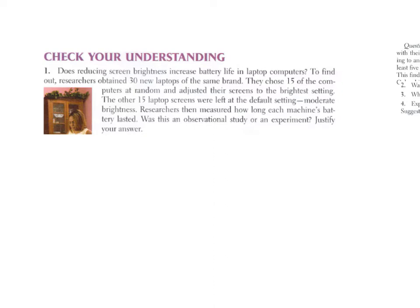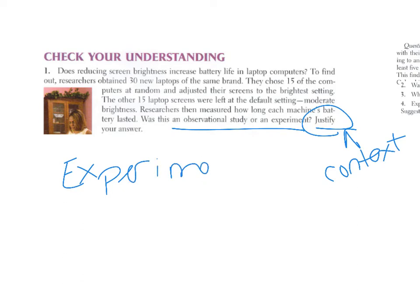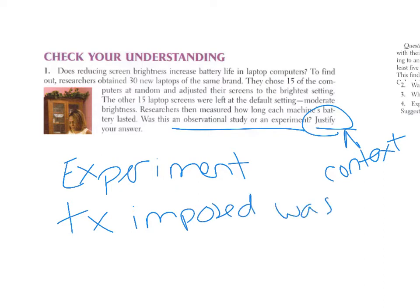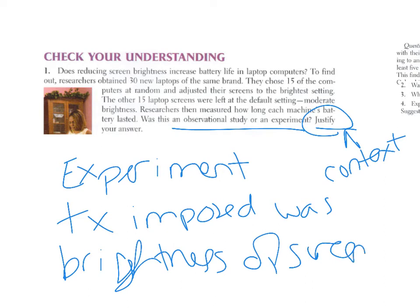Let's look at this example: 'Does reducing screen brightness increase battery life in laptop computers?' This was an experiment, and we can justify that by saying there was a treatment that was imposed. Using context, the treatment imposed was the brightness of the screens — that was controlled — so we can say that was the cause. That justifies calling it an experiment: a treatment was being imposed, and that treatment was the brightness of the screens.